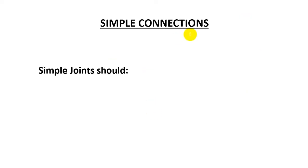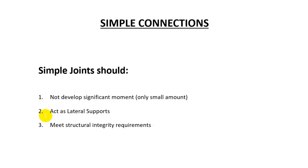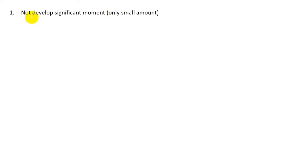Any simple joint must satisfy three requirements: first, it should not develop significant moment; second, it must act as a lateral support to the beam; and third, it must meet structural integrity requirements. The first requirement — no significant moment — is ensured by following the detailing recommendations given by the code for simple connections.